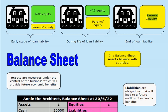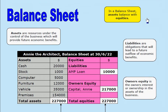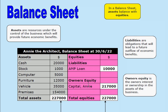So equity refers to who has an interest or claim in the assets, and in terms of a business, that's normally shared between liabilities and owner's equity. Let's revisit the balance sheet. In a balance sheet, as we have seen, two things balance: total assets always balances with total equities. A business has assets, and the interest in those assets is usually shared between liabilities — external claims, in this case AMP at $10,000 — and the equity held by the owner, in this case Annie at $217,000.